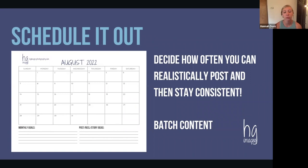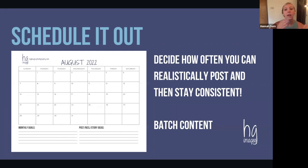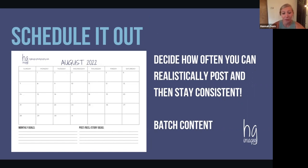Next step: schedule it out. The biggest thing with social media is to be consistent. That looks different for me in different phases of life — I've tried once a week, every day, three times a week, four times a week, two times a week. Right now I'm settling on three days a week because it fits well with my three content pillars: Mondays for photography tips or calls to action, Wednesdays for recent work, and Fridays for something fun. Just find a strategy that works for you.